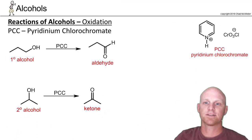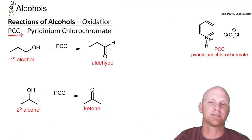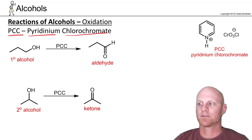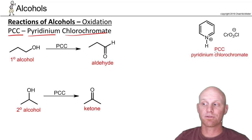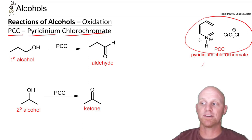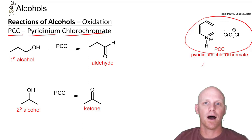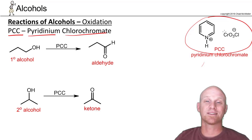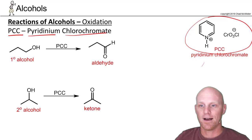The second oxidizing agent is PCC — almost everybody just calls it PCC, but it stands for pyridinium chlorochromate. If you mix chromium trioxide (CrO₃) with pyridine and hydrochloric acid, the pyridine gets protonated to form the pyridinium ion, and the chlorine complexes with the chromium reagent to give you the chlorochromate — that's PCC. Most likely you'll just need to recognize it as PCC, though occasionally someone writes out CrO₃, pyridine, and HCl.